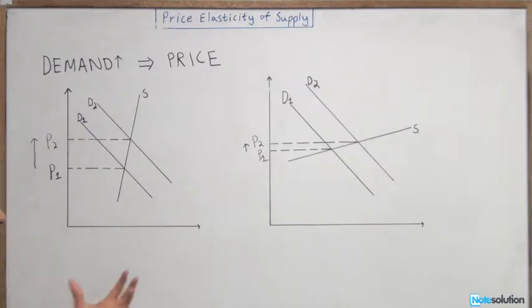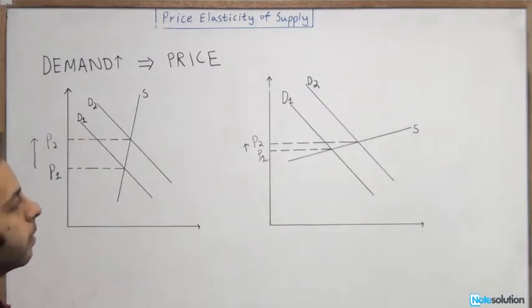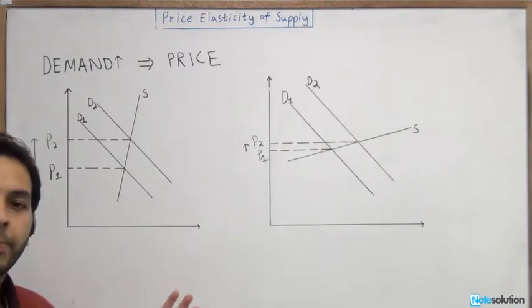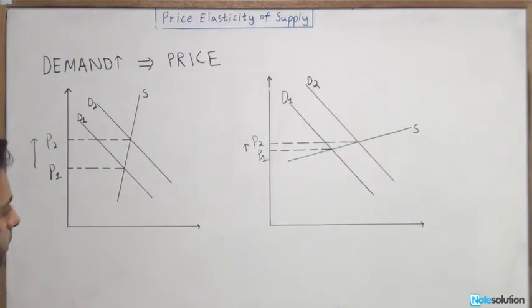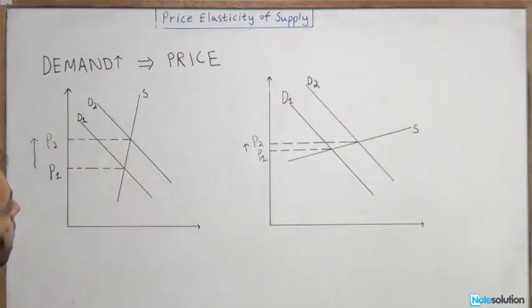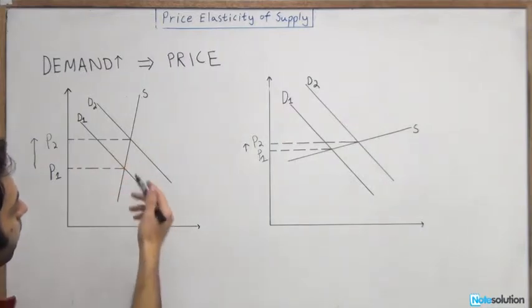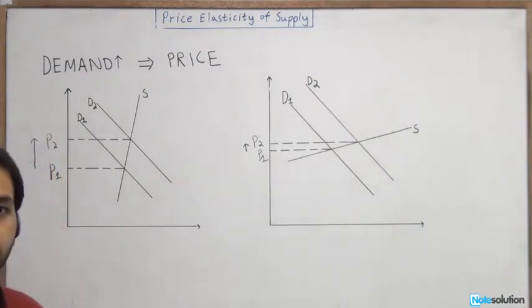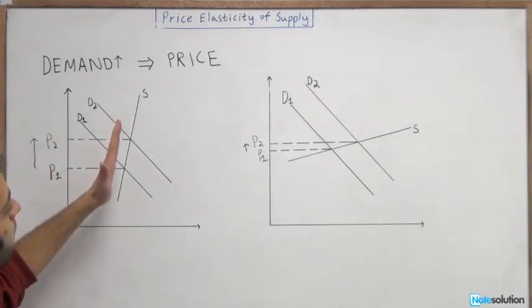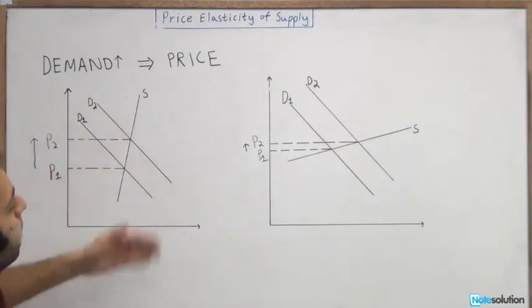Now, what we want to know is by how much this price would increase, and that is dependent on the elasticity of the supply curve. As we know over here, this is the supply curve. This is an example of an inelastic or less responsive supply curve, and you know because it's very steep.